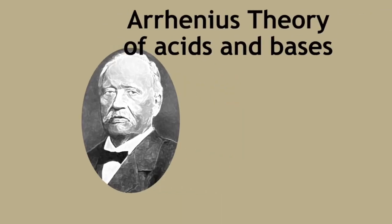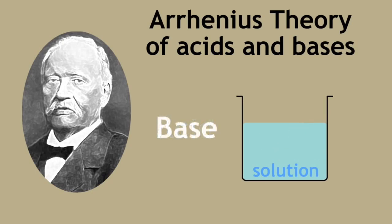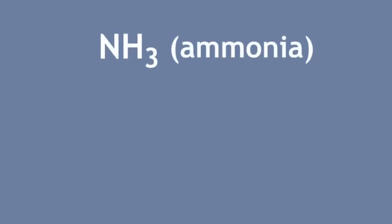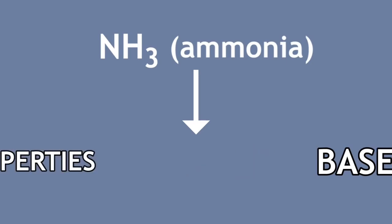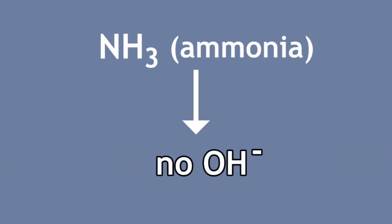The Arrhenius theory of acids and bases defines an acid as a substance that releases protons in solution, and a base as a substance that releases hydroxide ions in solution. We know that ammonia can act as a base and exhibits alkaline properties, but contains no hydroxide ions. How is this possible?